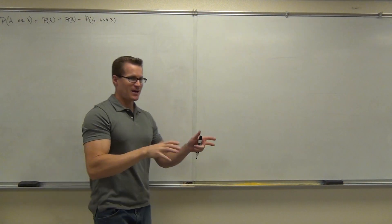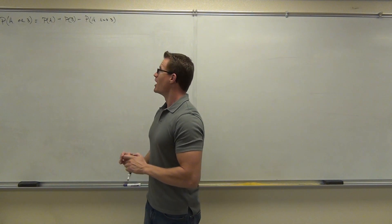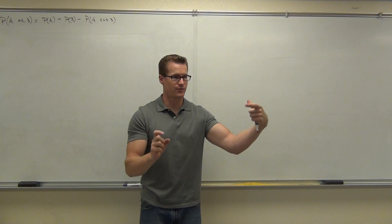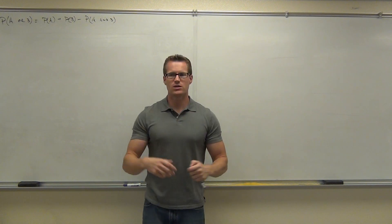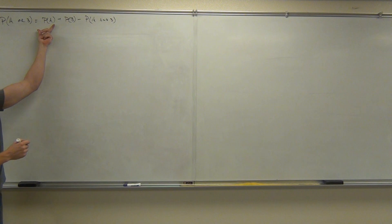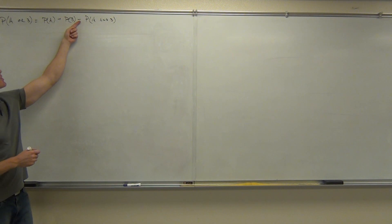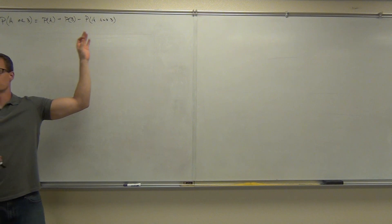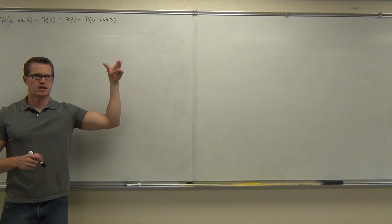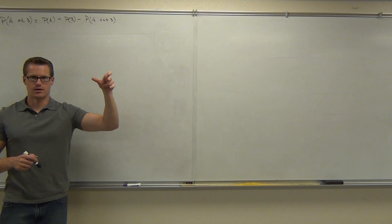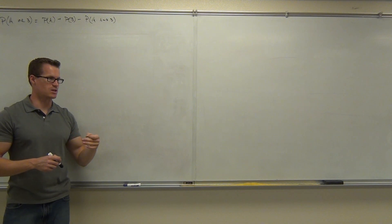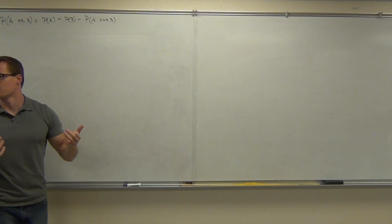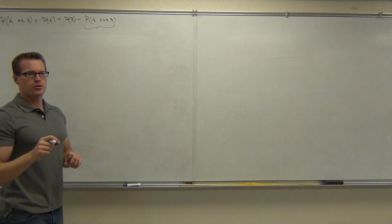Before our test, we were talking about the addition rule. What the addition rule said is if you want to find the probability of one event or another event occurring, we add the probability of the first event plus the probability of the second event, and then subtract the double count — that's the probability of event A and event B occurring in the same trial. That same is the key word. This means both at the same time.